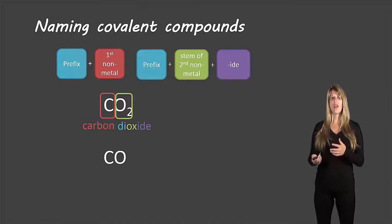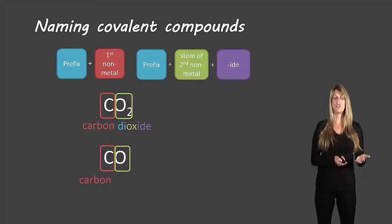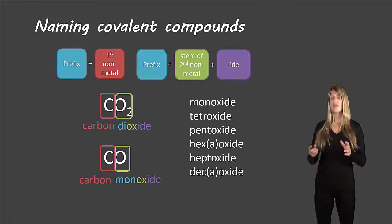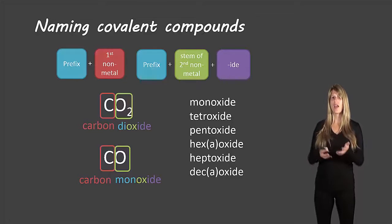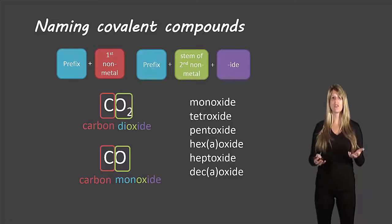Here's another example: CO. Each of carbon and oxygen has only one atom. We start with carbon — since there's one we don't use a prefix, as it's the first atom. However oxygen is the second atom, so we do use a prefix: monoxide. This is also a sort of exception in that oxygen blends with some prefixes. So it's not 'mono oxide' but 'monoxide'; not 'tetra oxide' but 'tetroxide'; not 'penta oxide' but 'pentoxide', and so on. There are two exceptions: hexa and deca can be written either way — hexaoxide or hexoxide, decaoxide or decoxide — either is perfectly acceptable.